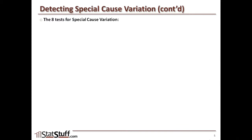These tests should be guidelines, giving us indicators of where we need to explore further to validate if this really is a special cause occurring — something we need to fix — or if it's common cause variation we didn't understand previously.